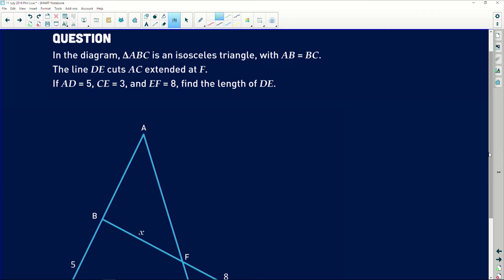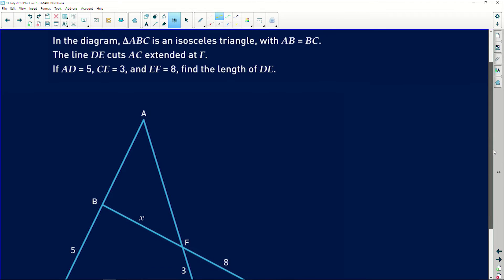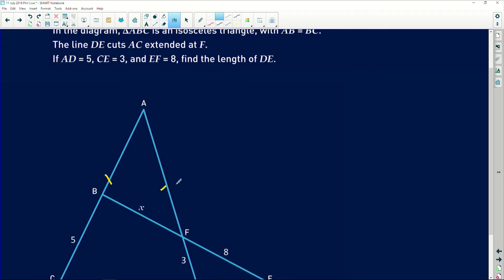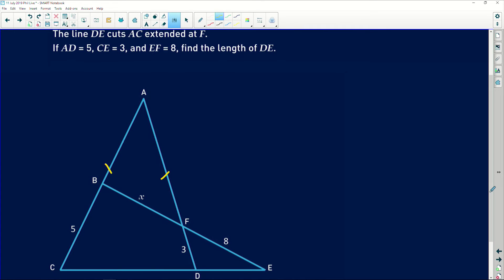It says in the diagram, triangle ABC is an isosceles triangle, which means those two sides are equal. AB is equal to BC. The line DE cuts AC extended at F. So basically they're saying that this line here cuts this line here at that point.